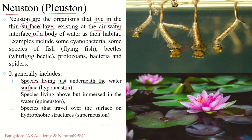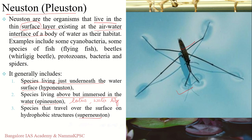Epineuston refers to species that are above but immersed in water — for example, water lily or lotus, which grow from the bottom up but remain along the surface. Superneuston refers to organisms able to travel over the surface on hydrophobic structures — for example, the water strider, which glides over the water surface by supporting its weight on water tension.